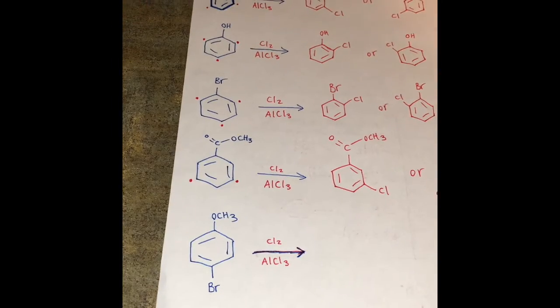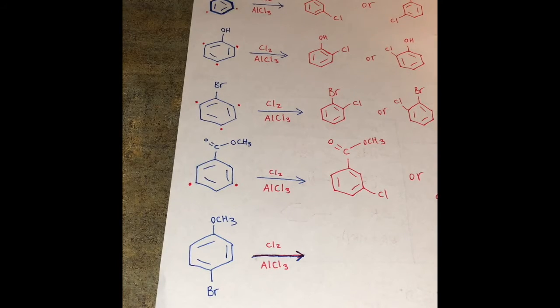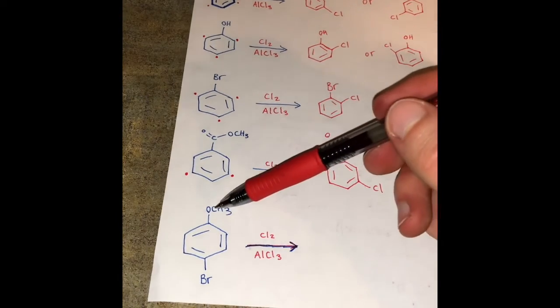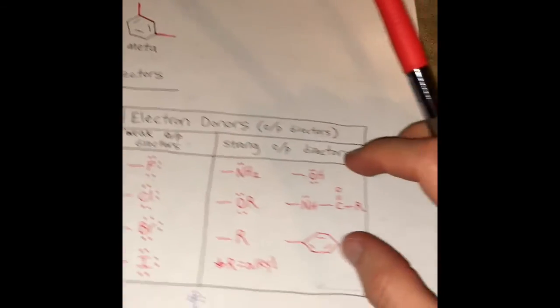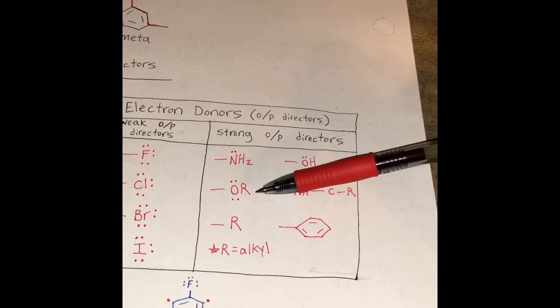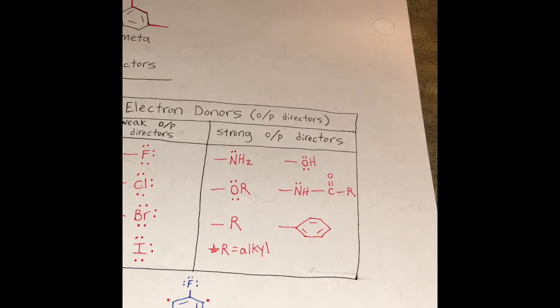Okay now this last one we have two substituents, two directors on our benzene. So I'm going to follow the same procedure as before. Let's start with the OCH3. The OCH3 is the same thing as an OR group with the CH3 being the R. This is a strong ortho para director.